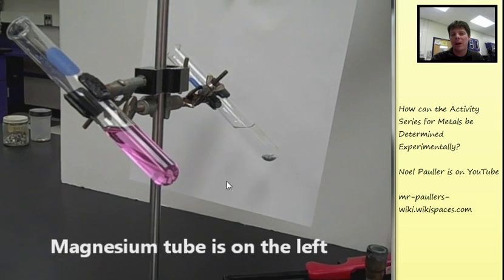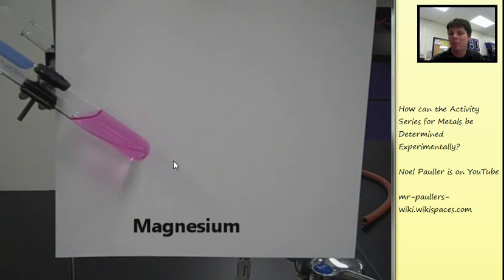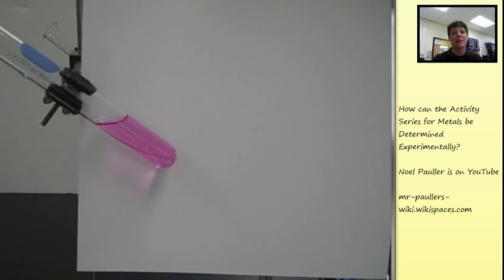Let's keep heating a little bit longer. Now, let's compare the color of the tubes. Here's the tube with the magnesium sample. We see that pink color indicating that a base has formed.